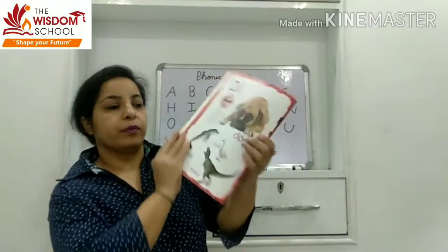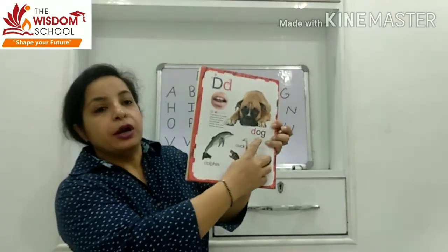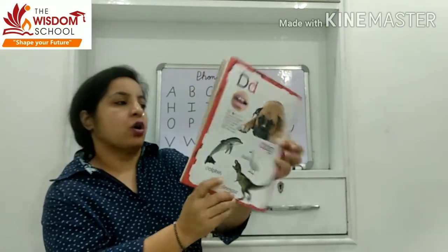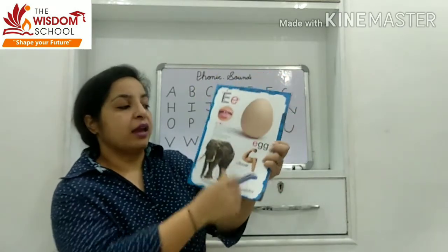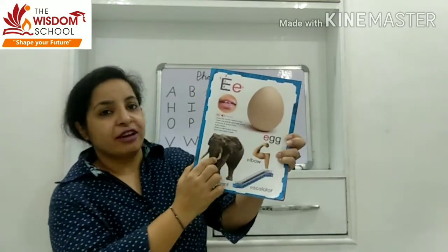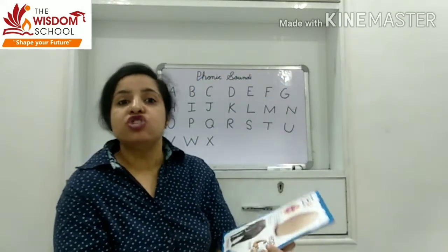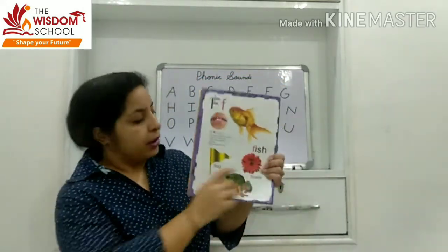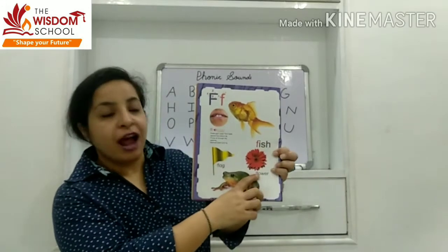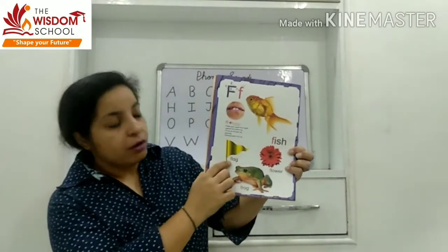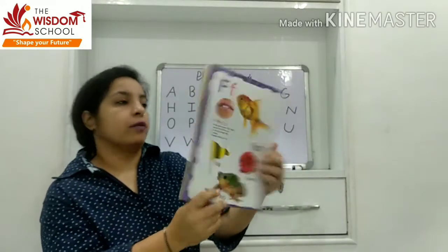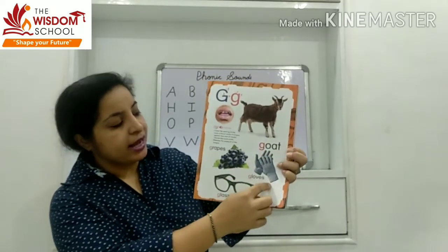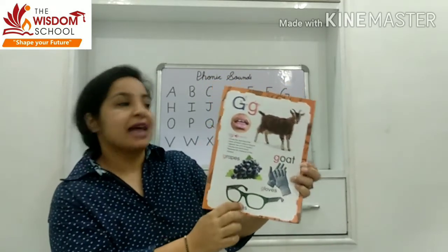D — duck, dog, dolphin, dinosaur. E — egg, elephant, elbow, engine. F — fish, flower, flag, frog. G — got, gloves, grapes, glasses.